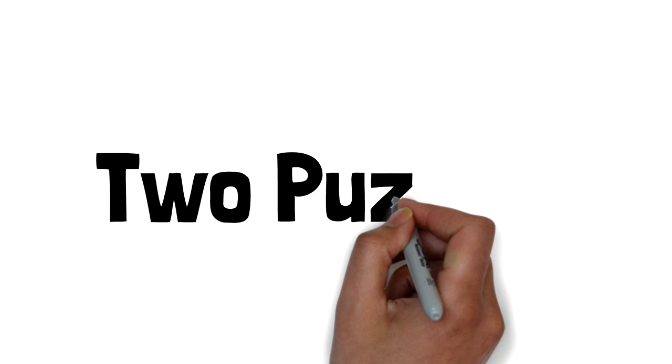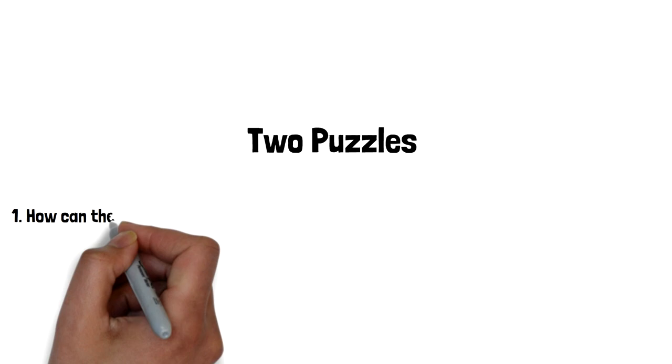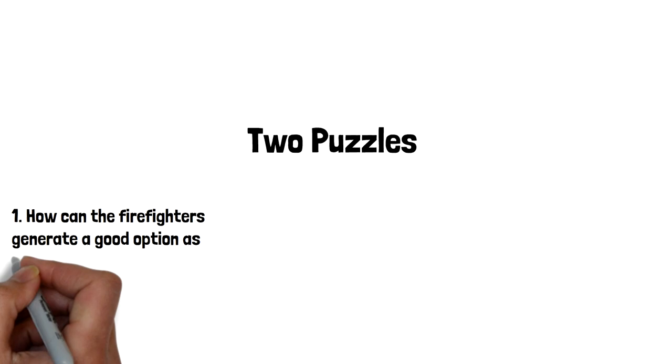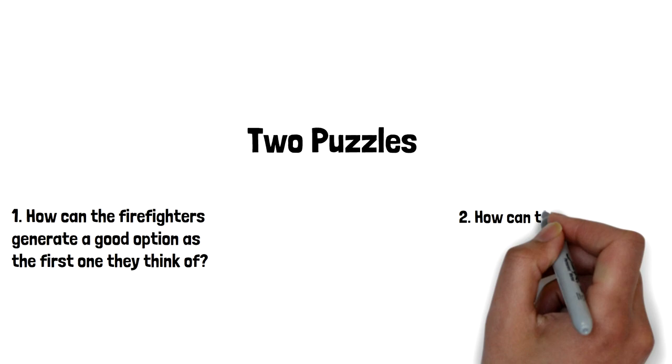So now we have two puzzles. First of all, he and the others that we studied, they all claimed that they could generate a good option as the first one they thought of. How could you do that? And then the second puzzle, even if you could do that, how can you evaluate one option except by comparing it to the others?